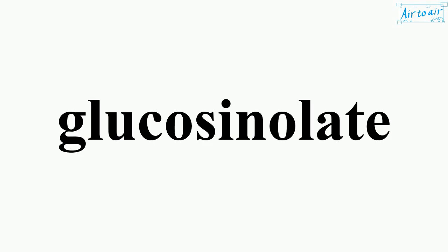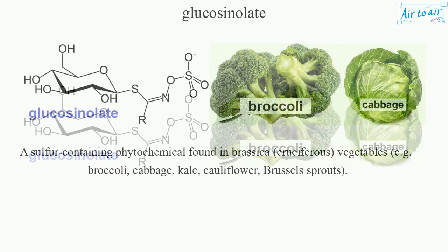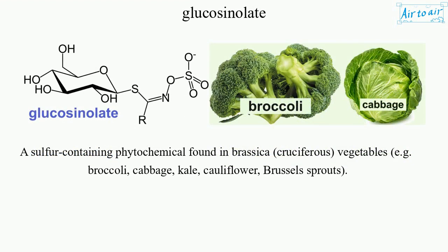Glucosinolate — a sulfur-containing phytochemical found in brassica, cruciferous vegetables, e.g. broccoli, cabbage, kale, cauliflower, brussels sprouts.